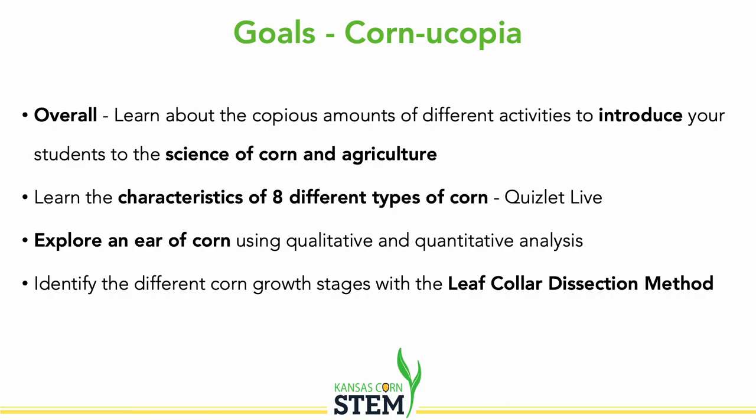Here are the goals for Cornucopia. This is a monster of a unit — pick and choose what you like. Its goal is to introduce students to the science of corn and agriculture. We're going to learn the characteristics of the eight different types of corn, explore an ear of corn and add math to that, do a leaf color dissection, and look at the growth stages within a corn plant, plus a lot of other stuff.